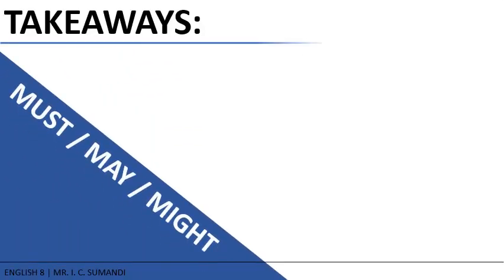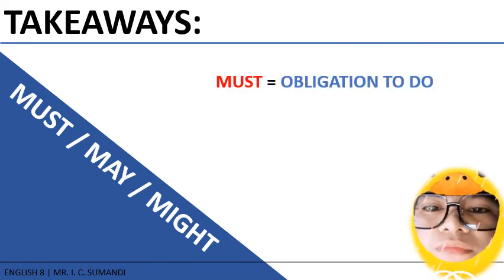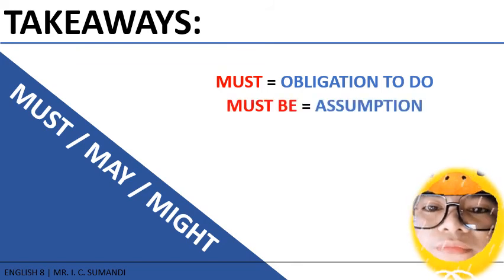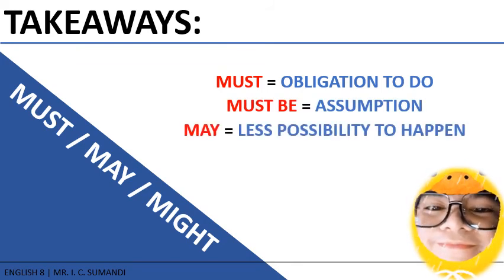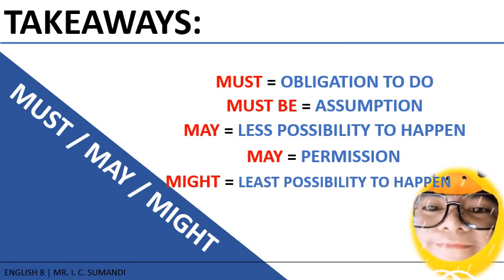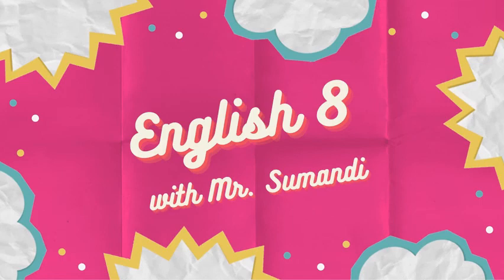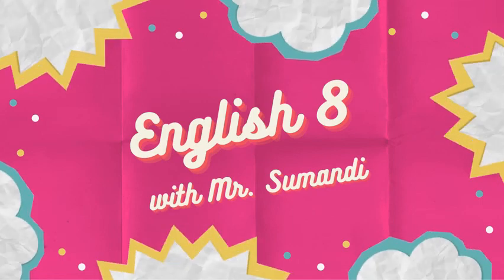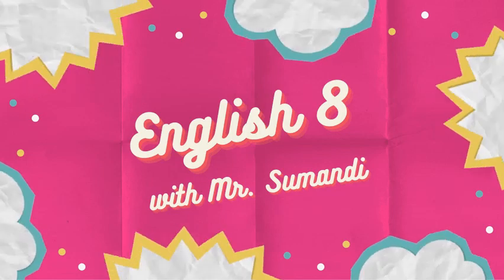Remember these takeaways: Must is used for obligations you need to do. Must be is an assumption. May shows less possibility to happen, and may is also used for permission. Might shows the least possibility for actions to happen. That will be all for now — click the next video for other lessons related to modals. Thank you.